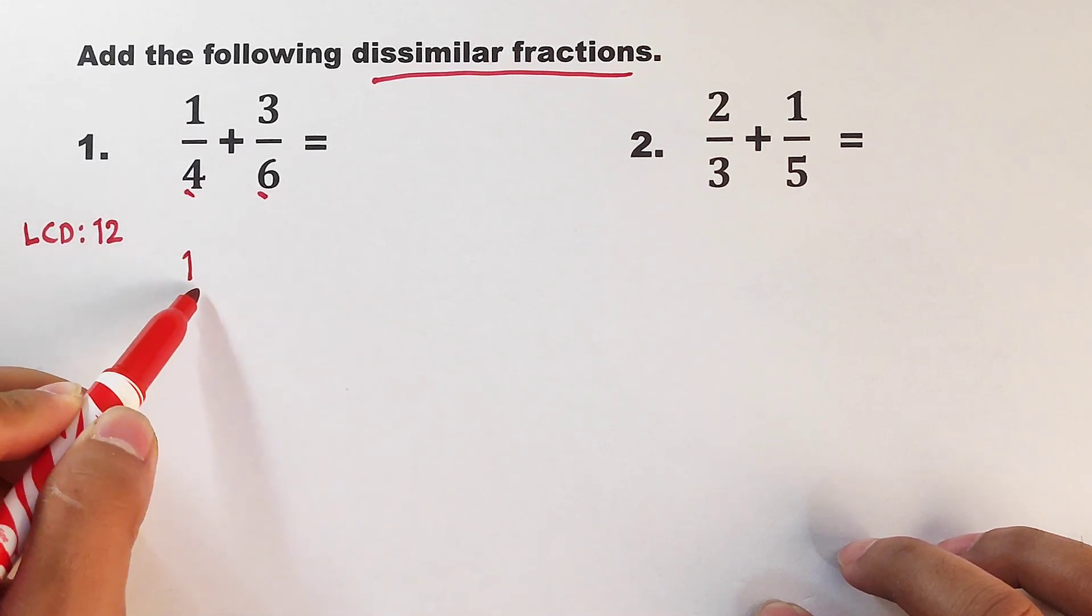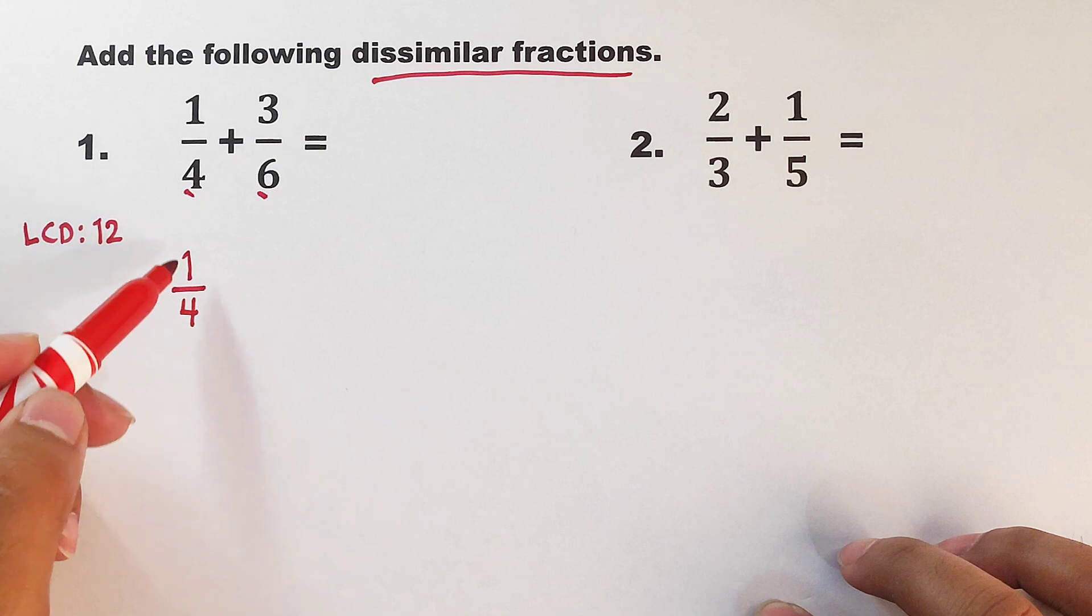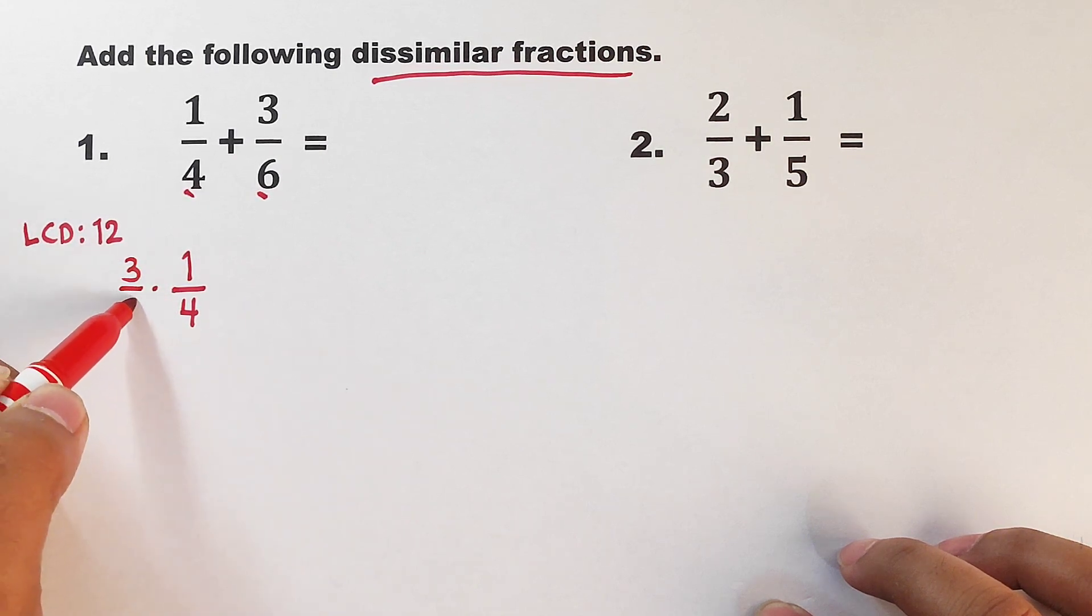we will multiply the whole fraction 1 over 4 by 3 over 3 because it will not change the value of the fraction itself because 3 over 3 is just equal to 1.